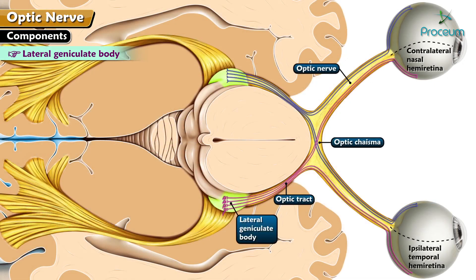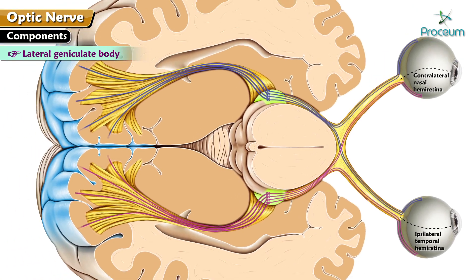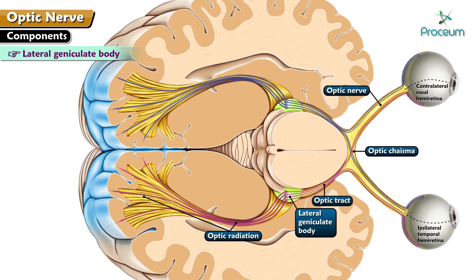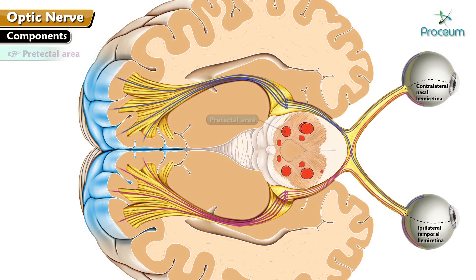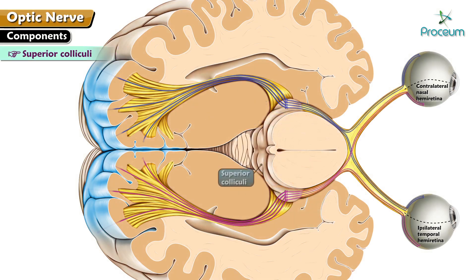The lateral geniculate body projects through the optic radiation, or the geniculo-calcarine tract, to layer four of the primary visual cortex located in Brodmann's area 17. The pre-tectal area is present in the midbrain in front of the tectum.